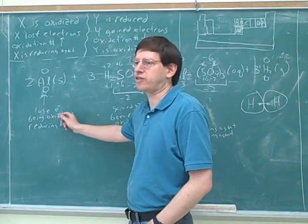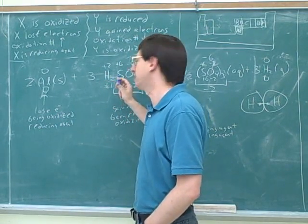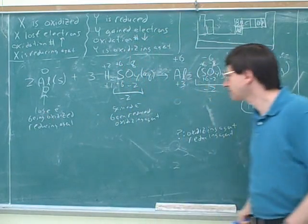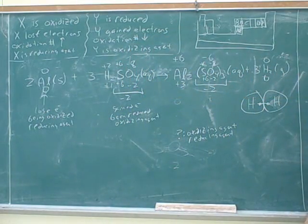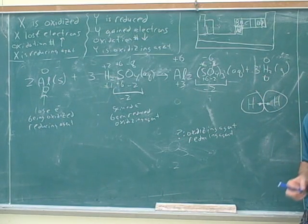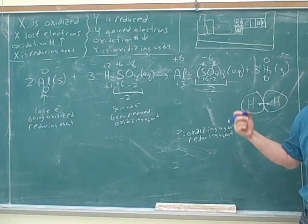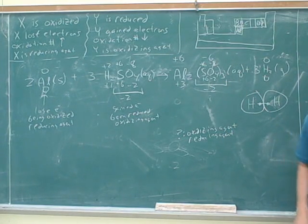The aluminum here lost electrons. Who took them? The hydrogen. The hydrogen gained electrons, and who did it take it from? The aluminum. That's how we know this is a redox reaction. Suppose we had done this reaction and none of the elements had had a change in their oxidation numbers. Well, then that wouldn't be a redox reaction. Many reactions are not redox reactions, because the oxidation numbers don't change.